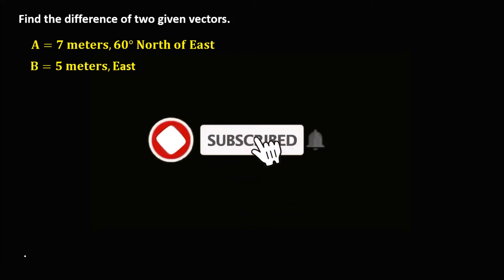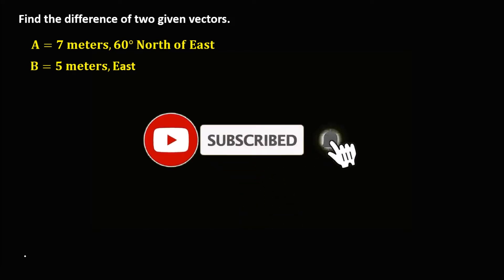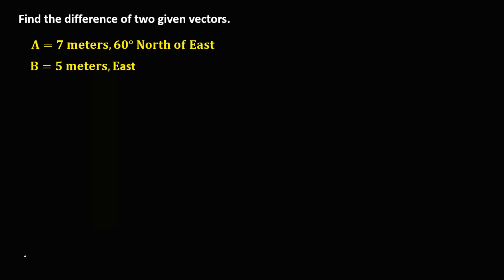Welcome to MathStorya. Let's work on this problem: find the difference of two given vectors, vector A and vector B. To find the difference of two vectors, that's A plus negative B. So we need to find the opposite of vector B, which is negative B.